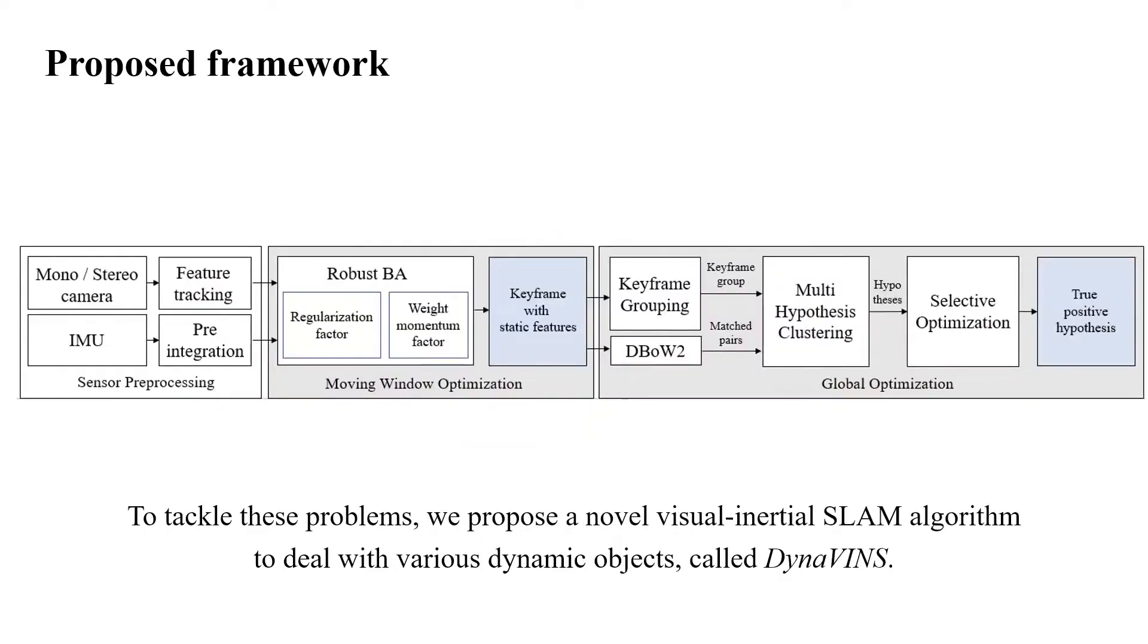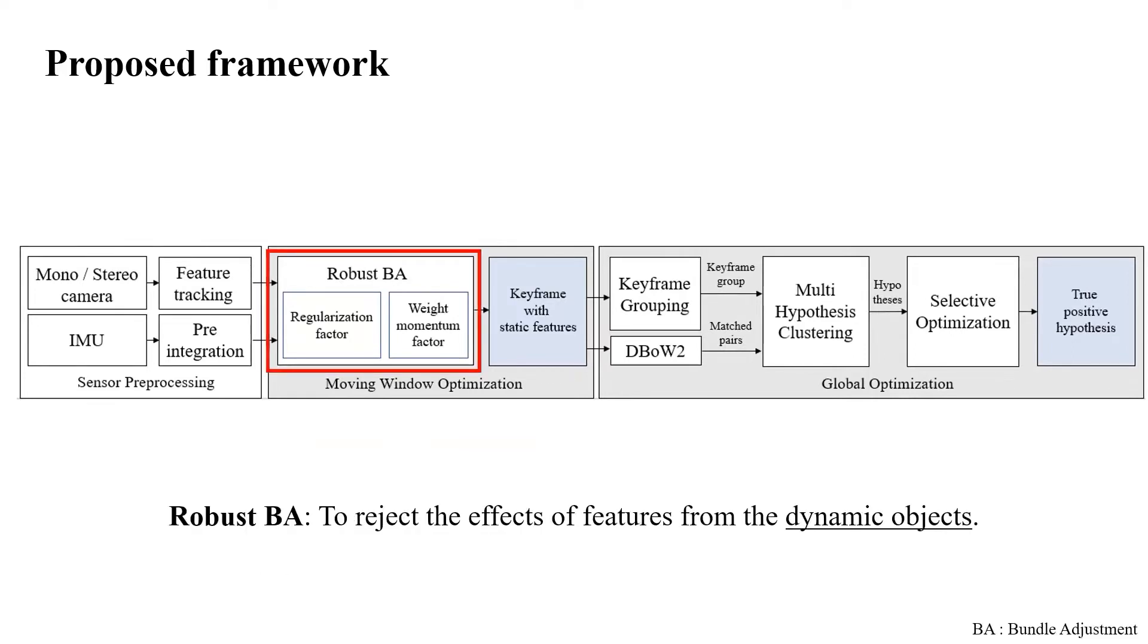To tackle these problems, we propose a novel visual inertial SLAM algorithm to deal with various dynamic objects, called Dyna Vins. Our algorithm consists of two parts. First, a robust BA is proposed to reject the effects of features from the dynamic objects.